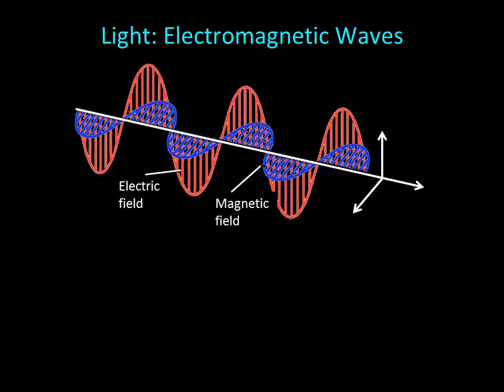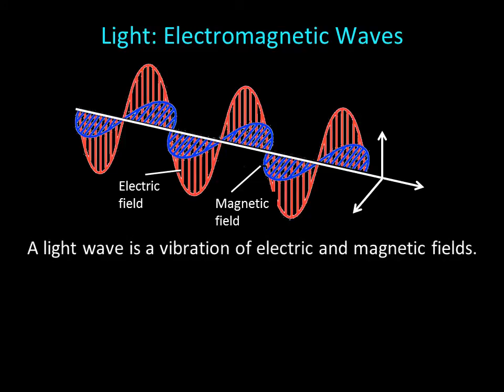We can imagine these fields, magnetic and electric, oscillating in directions perpendicular to one another. That's light. Light waves are traveling vibrations of both electric and magnetic fields. So we say light is an electromagnetic wave.